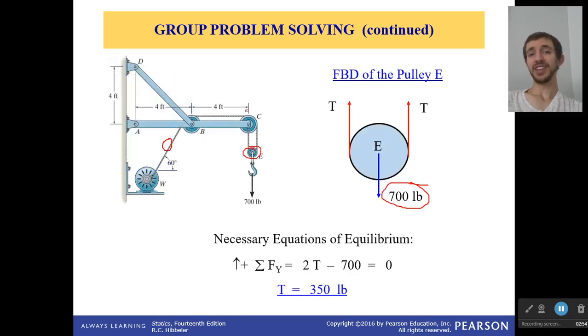Now wait a second, how do we know this already? Well that tension doesn't change unless we're saying that there's friction in these pulleys. If they're smooth pulleys with no friction, that tension will stay the same all the way through the rope.